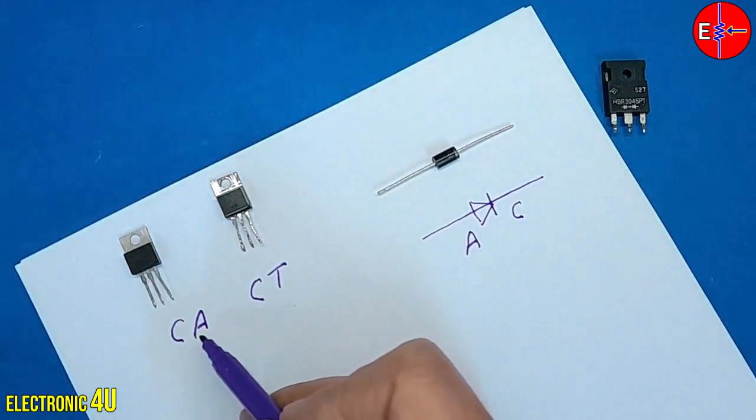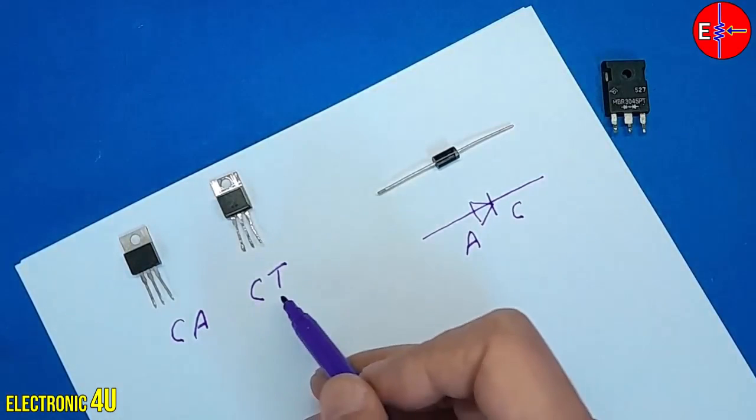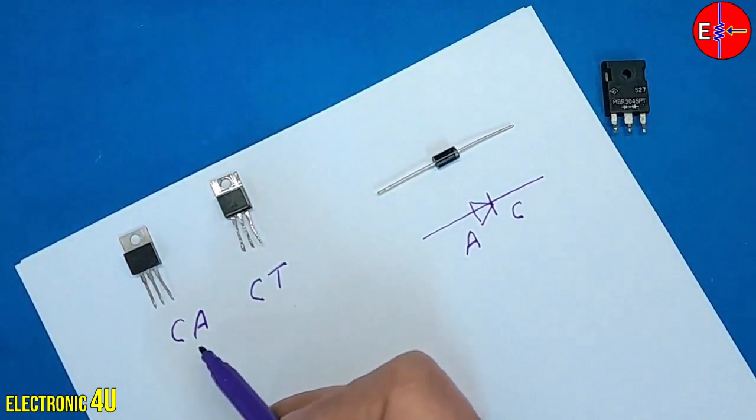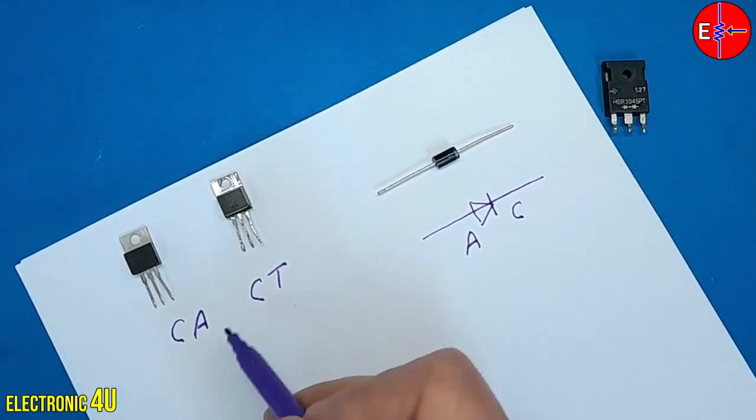CA means common anode and CT means common cathode. Common anode means that two diodes inside the components are connected from the anode side, which is from the middle pin of the component. Cathodes are placed at two pins on both sides.